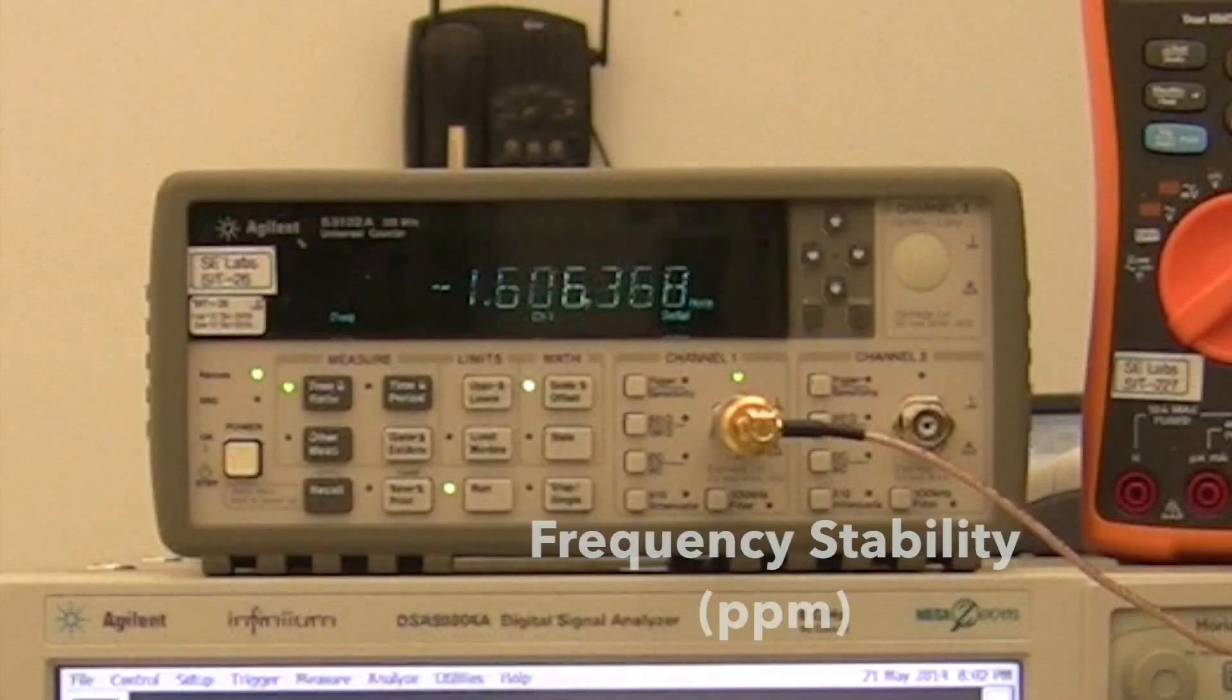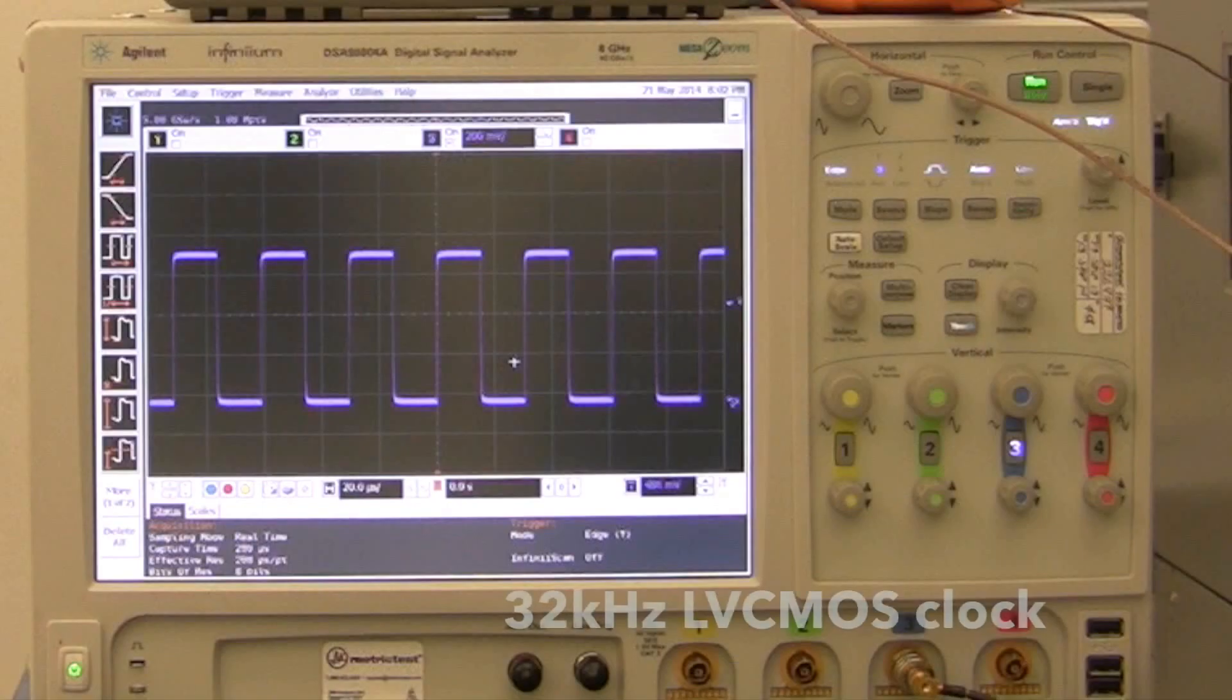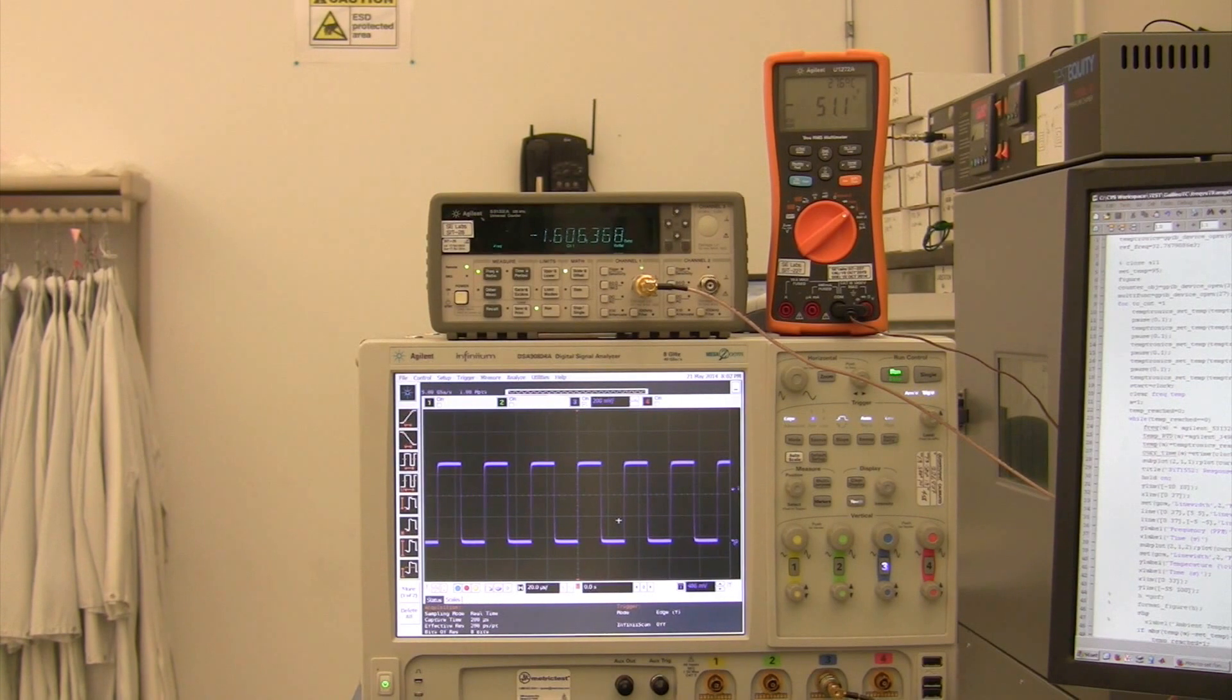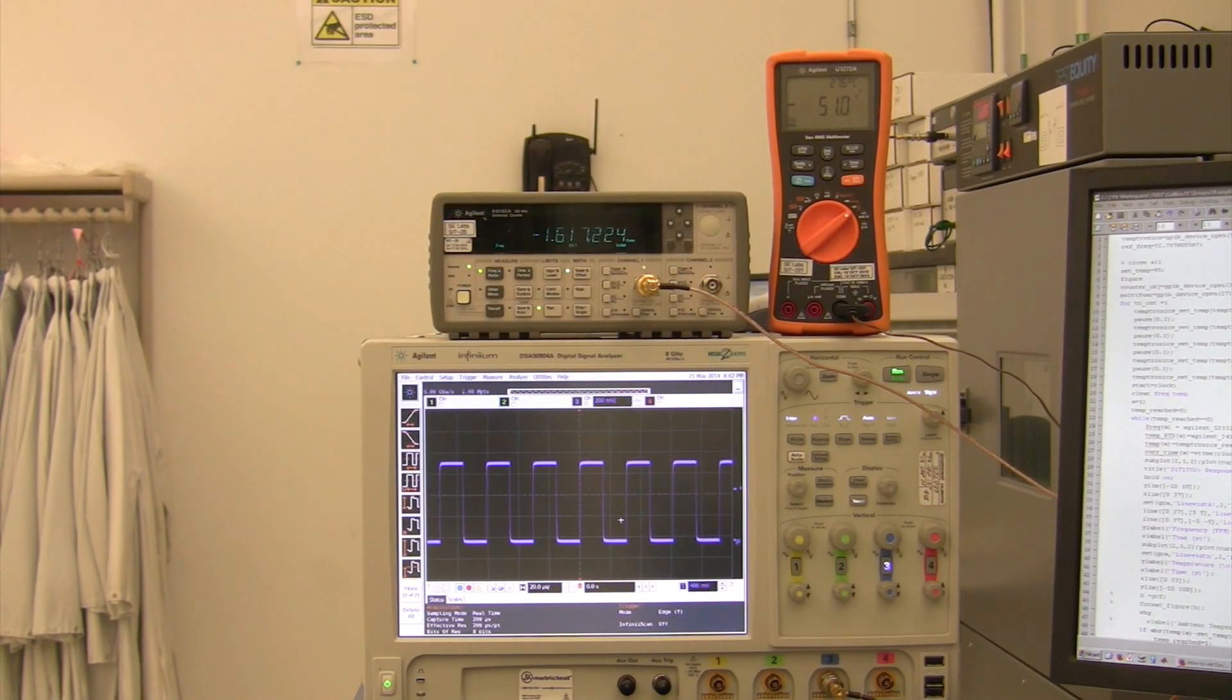The rest of the test equipment will help us see the measured performance and includes a frequency counter, a scope that shows the 32 kHz LV CMOS output, a DMM showing the DUT temperature, and a monitor that displays the change in temperature and the frequency stability.